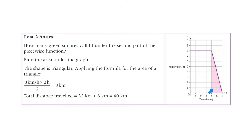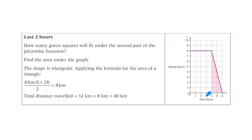Now let's look at the last 2 hours — that's from 4 hours to 6. We could count the green squares, but it gets difficult with partial boxes. Instead, the shape is triangular, so we apply the formula for the area of a triangle: half base times height. It's half times 2 times 8, which gives 8. The total distance travelled is 32 plus 8, so the whole distance is 40 km.